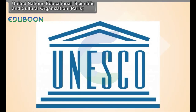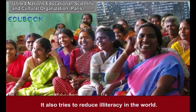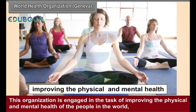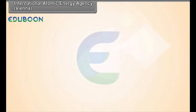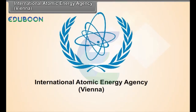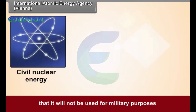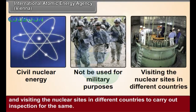United Nations Educational, Scientific and Cultural Organization (UNESCO): The main function of this organization is to promote interaction between different countries in the fields of education, science and culture. It also tries to reduce illiteracy in the world. World Health Organization (WHO): This organization is engaged in the task of improving the physical and mental health of the people in the world and carrying out immunization campaigns to control epidemics. International Atomic Energy Agency (IAEA): This agency has been given the important task of keeping a check on the use of civil nuclear energy, ensuring it will not be used for military purposes, and visiting the nuclear sites in different countries to carry out inspection for the same.